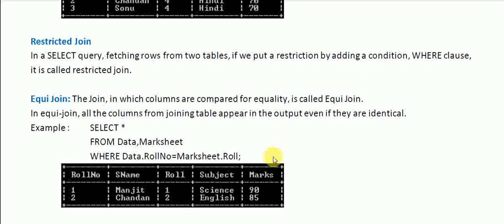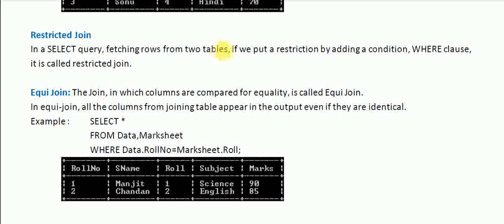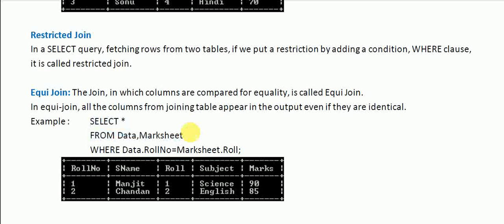The first type is the restricted join. In a SELECT query fetching rows from two tables, if you put a restriction by adding a condition in the WHERE clause, it is called a restricted join. So while joining, if you put a WHERE clause, it becomes a restricted join.